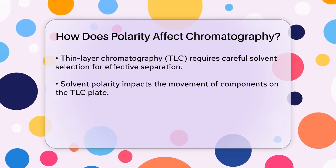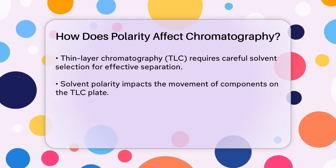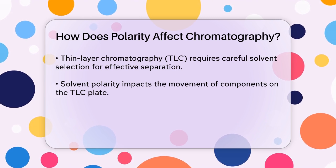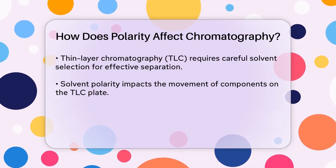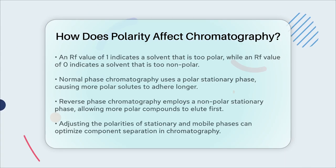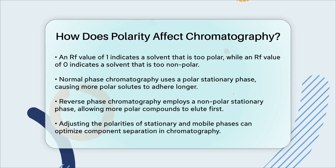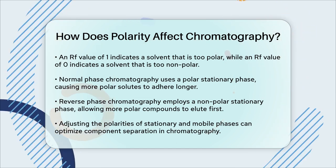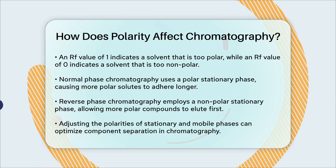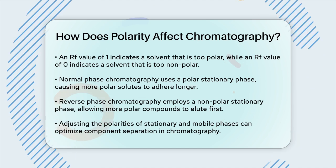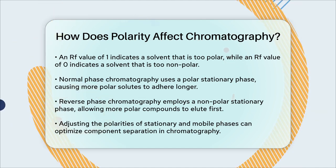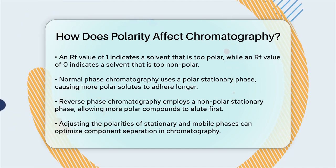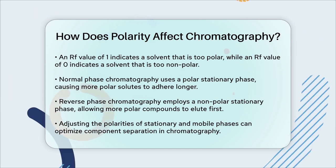The type of chromatography also affects how polarity plays out. In normal phase chromatography, the stationary phase is polar, and the more polar solutes adhere more to it, while the less polar components are eluted faster. In reverse phase chromatography, the stationary phase is nonpolar, and the more polar compounds are eluted first.